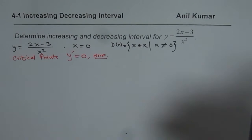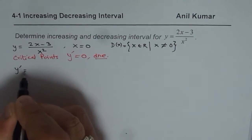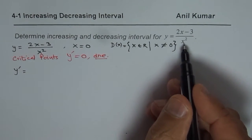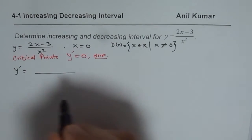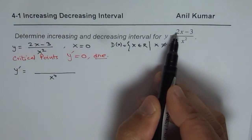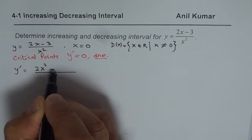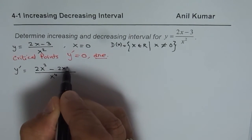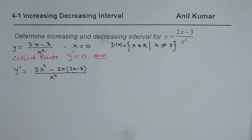Let us find the derivative of this function. We have y equals 2x minus 3 over x squared, so y prime will be found using the quotient rule. The denominator squared is x to the power of 4, times the derivative of the numerator which is 2, minus 2x times the derivative of the denominator 2x, applied to 2x minus 3.